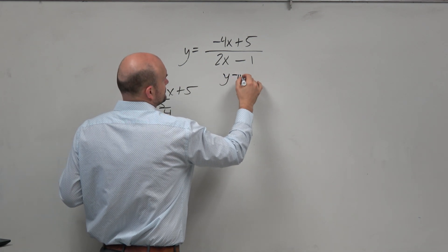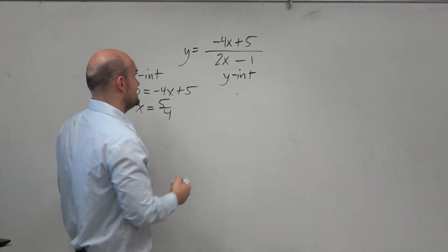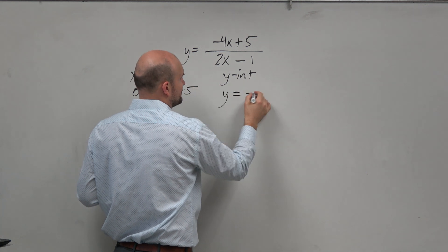To find the y-intercept, I'm just going to take my constant over my constant, 5 over negative 1, so I can see y is equal to negative 5.